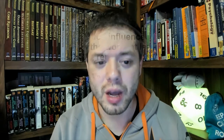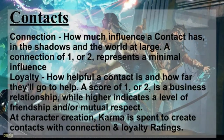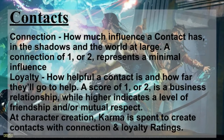When it comes to making your contacts, you have two stats to really worry about: connection and loyalty. Connection is how much influence a contact has in the shadows and the world at large. A connection of one or two represents pretty minimal influence, while three and four is more middling — they can still pull a few favors, get a few puppets dancing on their strings. Higher than that and you've got a contact with the connections necessary to move a lot of paperwork, material, or just get things done on your behalf.